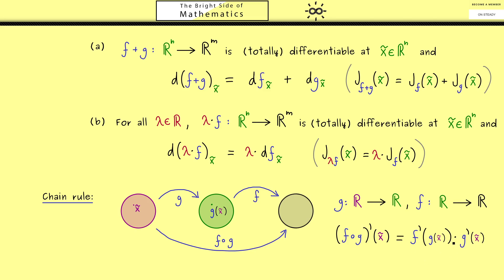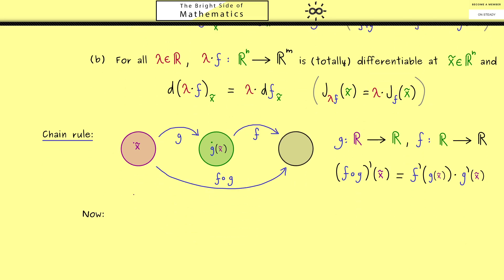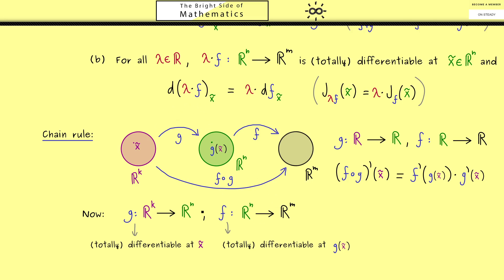This is the standard chain rule from real analysis. Now we will spice things up: the sets we consider could lie in higher dimensional spaces, and the dimension could be different in every step. We have ℝᵏ, ℝⁿ, and ℝᵐ — a function g that starts with k variables and maps into ℝⁿ, and then a function f with n variables that maps into ℝᵐ. The assumption we need is that g is totally differentiable at x̃ and that f is totally differentiable at the point g(x̃), meaning our total derivatives exist at the given points.